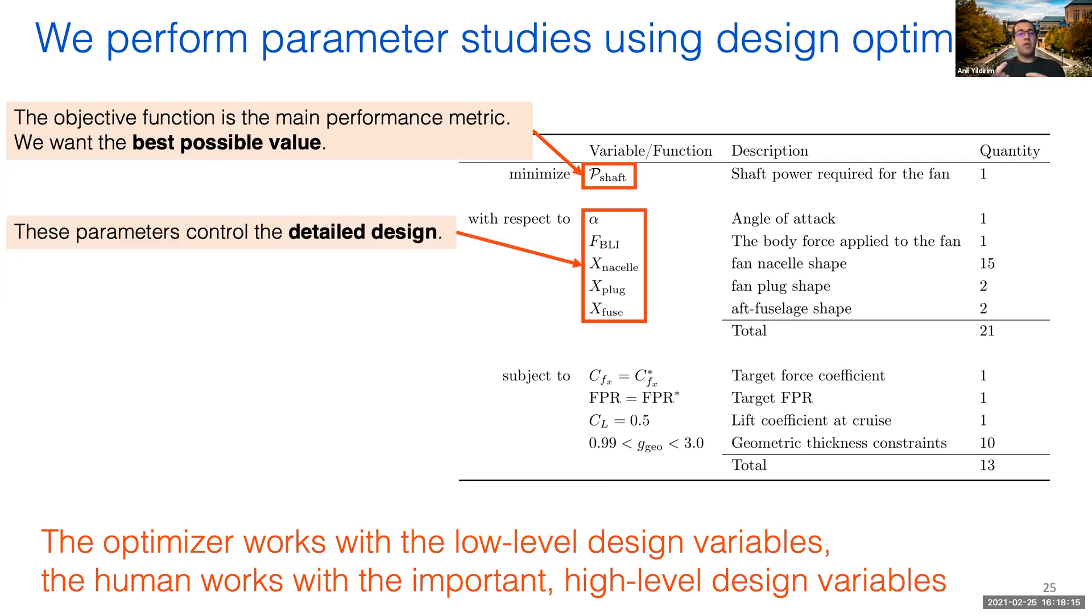The design variables represent the control we have over the detailed design of the aircraft. Even though they're important parameters, I myself actually do not care what they are, as long as they give me the best design. This is why I'm having the optimizer adjust these variables instead of worrying about them myself.